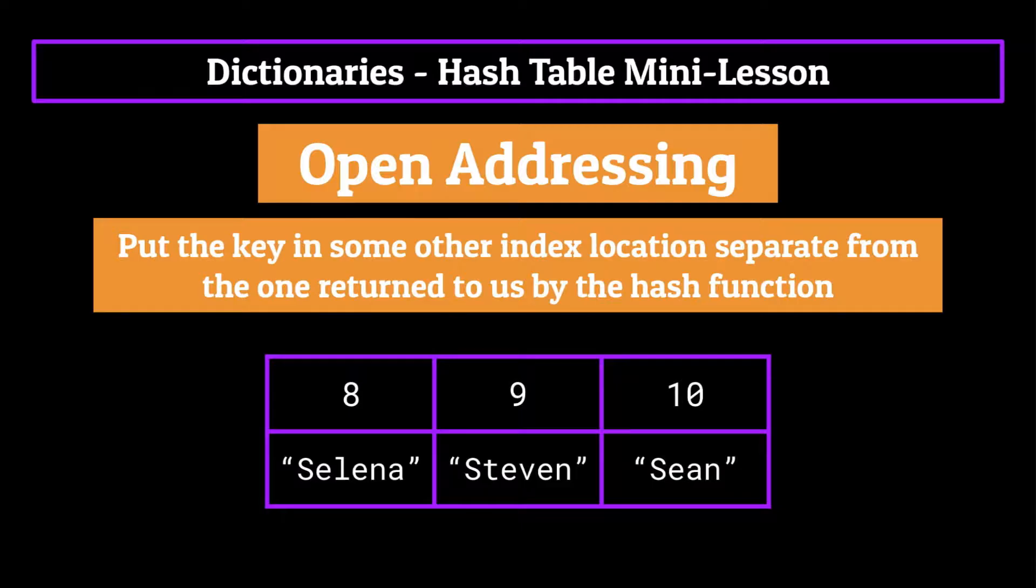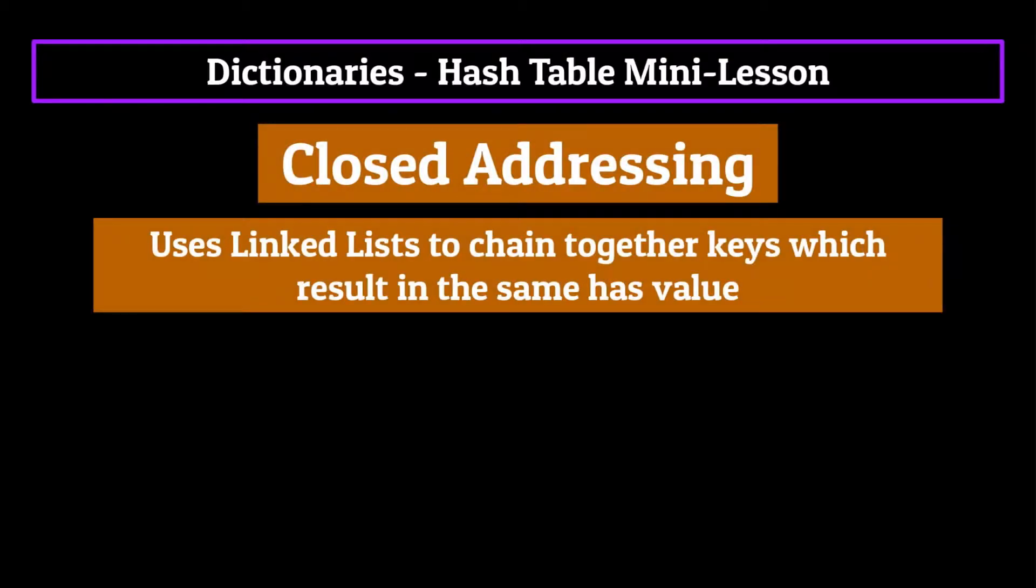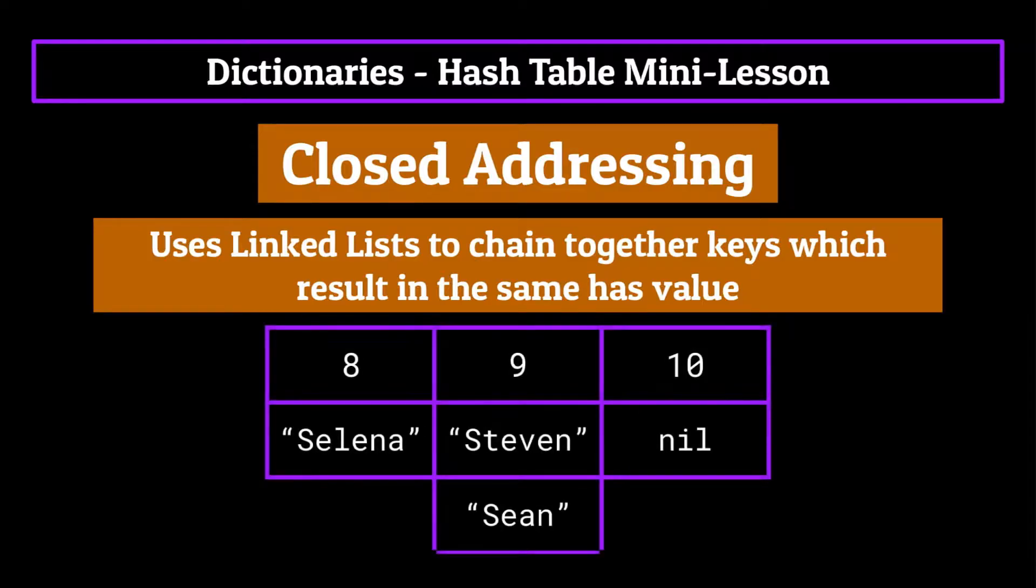Now this does make it harder to interact with the data in our dictionary later on, which is why computer scientists developed closed addressing, which works a little bit differently. Closed addressing uses linked lists to chain together keys which result in the same hash value. So the keys Steven and Sean would get stored in a linked list at the index location nine. The main drawback to this is that when we want to interact with the values stored in the key value pair for either Steven or Sean, we would have to look through the linked list for the key that we want. If there are 200 keys hashed to one index, that's not good. So there are definitely pros and cons to each methodology of working with collisions.